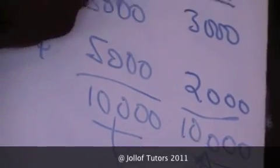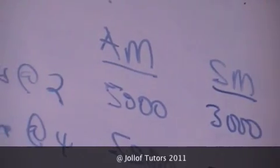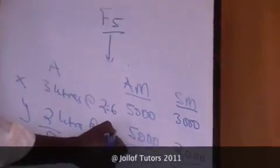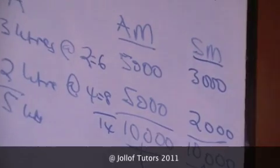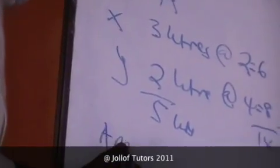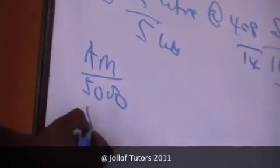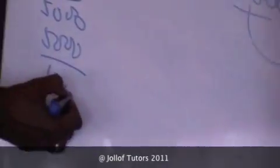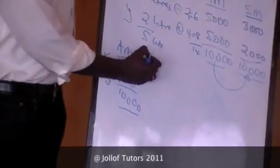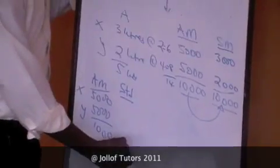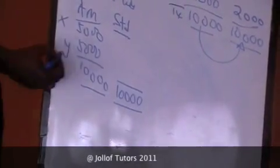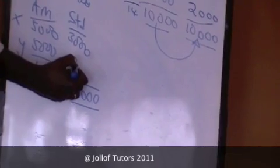Now we have an actual mixture and a standard mixture. We have the cost of the product: 2 times 3 is 6, and 2 times 4 is 8, meaning the cost of one unit is $14. To summarize: the actual mixture is 5,000 liters of X and 5,000 liters of Y, making 10,000 liters total. The standard mixture out of this 10,000 liters — cut and paste — gives us 3,000 liters and 2,000 liters.